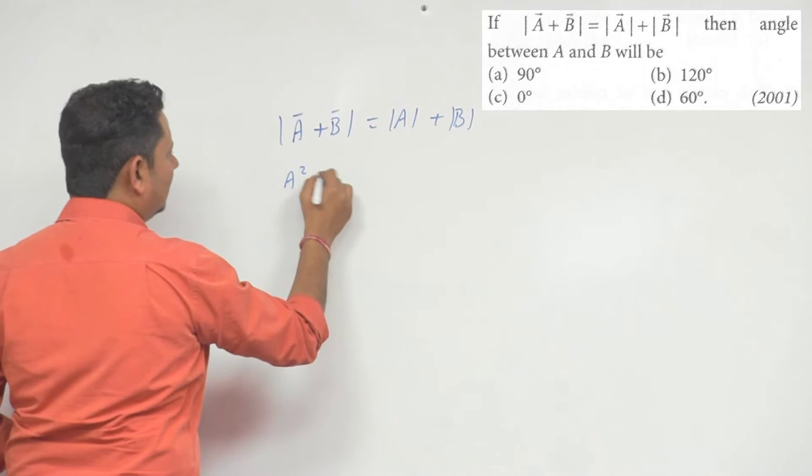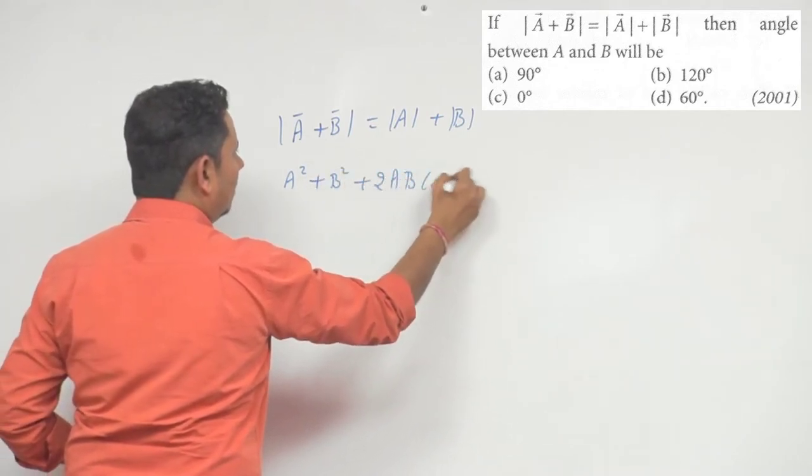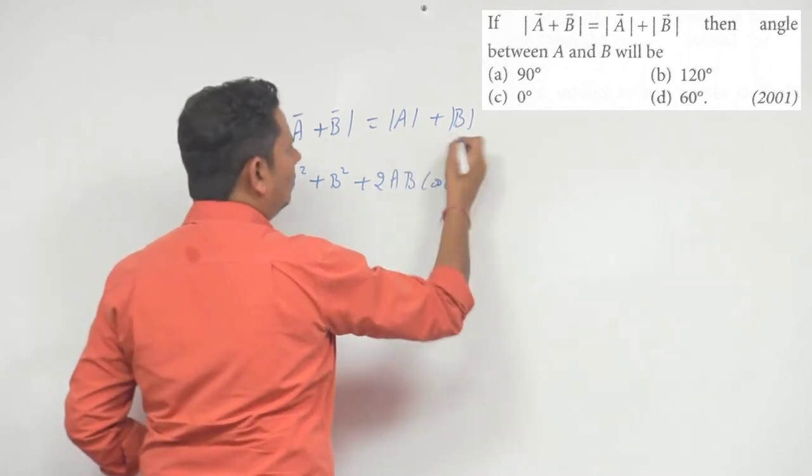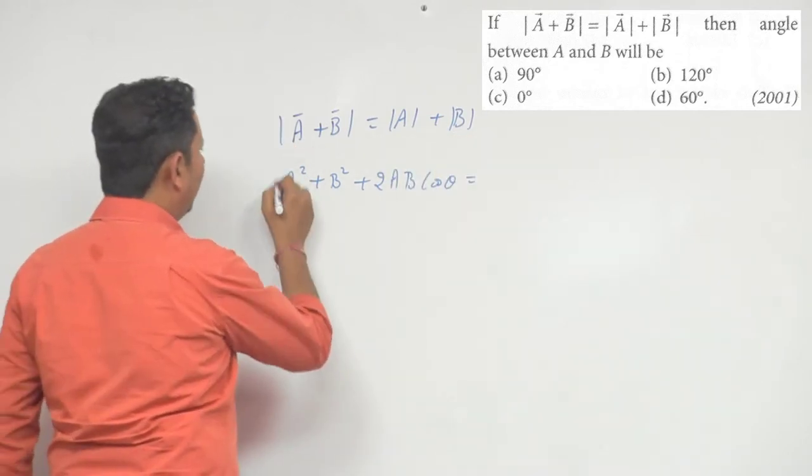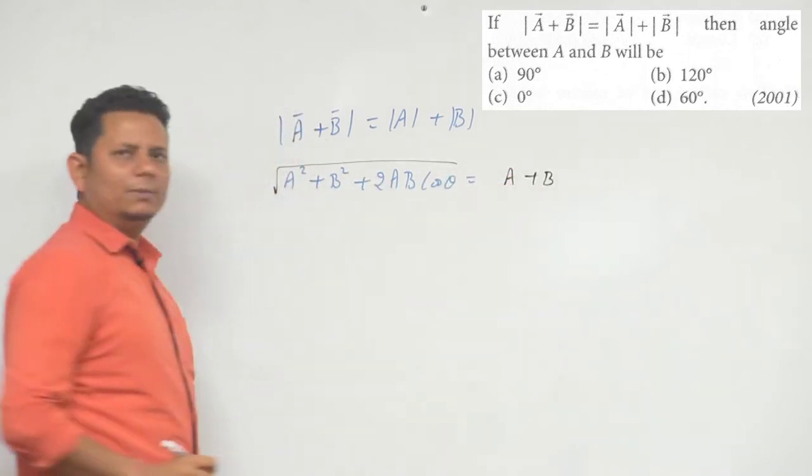Hum licksakta hai A square plus B square plus 2AB cos theta is equal to, will be equal to, iska magnitude aega, under root here haa pere leke, will be equal to A plus B. Yeh sara ye cheeze magnitude mein hai, all right.